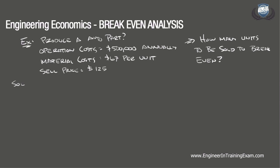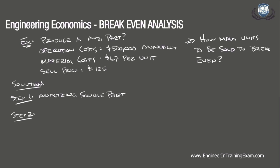Our first point of concern is to determine what type of break-even problem we are dealing with. As the problem states, we are analyzing a single product going to market. The goal is to determine how many units the company would need to sell to break even, considering all projected future money disbursements and receipts. There is a base annual operating cost plus a separate manufacturing cost that must be accounted for, and the part would comfortably sell at $125 per unit. We determine the number of units by setting the equivalent uniform annual cost equal to the equivalent uniform annual benefit: EUAC = EUAB.